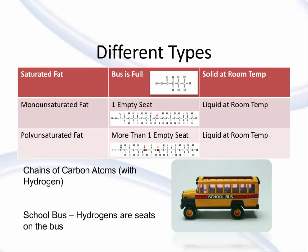We always have to go back to the science. Without getting too technical, let's look at the three different primary types of fat: saturated fat, monounsaturated fat, and polyunsaturated fat.